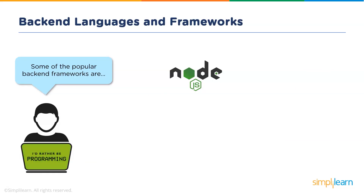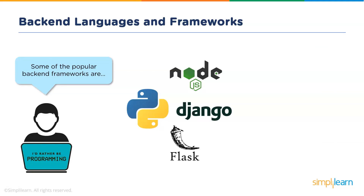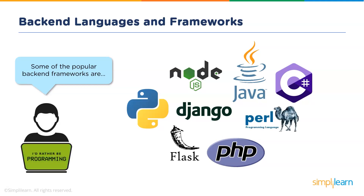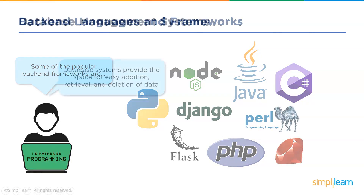Let's have a look at some back-end languages and frameworks. Firstly we have Node — Node and Express.js are packages provided by JavaScript. Then there's Python, a very popularly used language; Python frameworks like Django and Flask are used to create the back-end of applications. Then there's Java, which provides Spring and Java Server Faces. There's C#, which provides frameworks like ASP.NET Core and ASP.NET MVC. Other popularly used back-end languages are PHP, Perl, and Ruby.